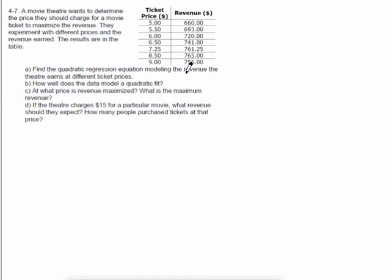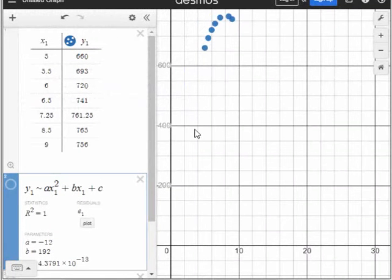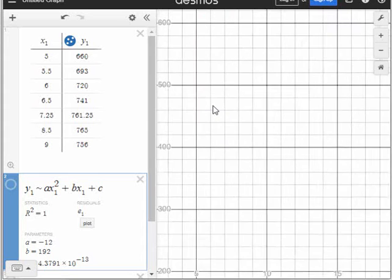So we're going to find the quadratic regression equation. Although if you were to sketch this out, you'd probably see the answer already. How well does the data model it? What price is revenue maximized? And what is the maximum revenue? And if they charge $15, well, then what would the revenue be that they should expect? So, of course, you're just going to type it all in like that, right? So you typed in all your data like that.